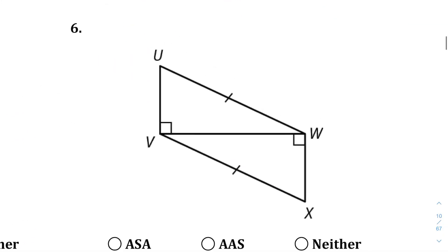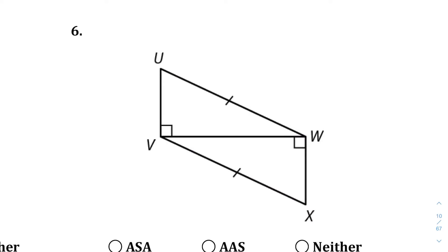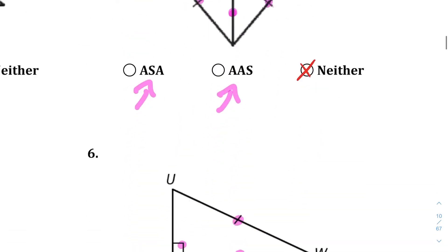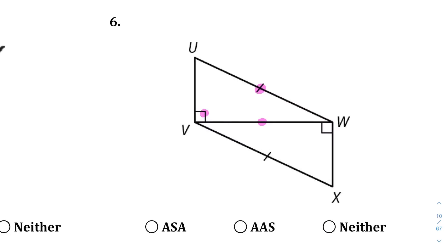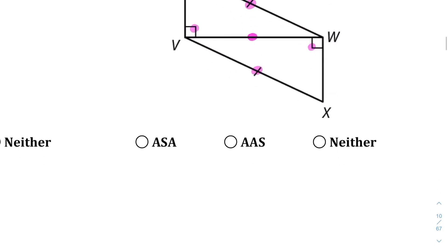Looking at question six, we have a side, a side, and then an angle — that's the same situation as question four. It spells another word we don't use, and none of these represent a valid congruence theorem, so we're going to go with neither.